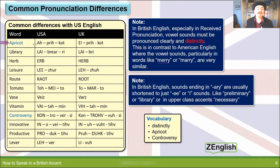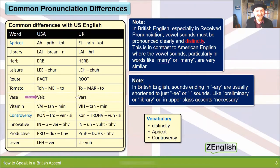Let's have a look at some common differences. Apricot / apricot. Library / library. Herb / herb. Leisure / leisure. Route / root. Tomato / tomato. Vase / vase. Vitamin / vitamin. Controversy / controversy. Innovative / innovative. Productive / productive. Lever / lever.